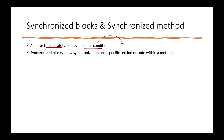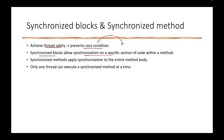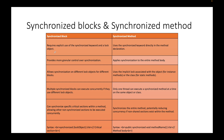Synchronized blocks allow synchronization on a specific section of code, but methods will apply synchronization on the entire method. There can be only one thread that can execute the synchronized method at a time. In table form: a synchronized block requires the explicit use of the synchronized keyword and a lock object, whereas a method only requires the keyword in the method declaration. Synchronized blocks provide more granular control, but the method applies synchronization to the entire method body even if only part of it needs protection.